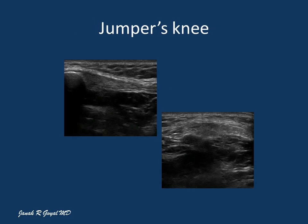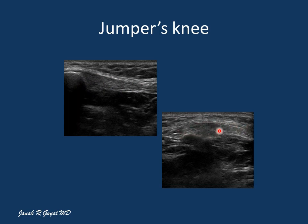Here is a patient with jumper's knee. Jumper's knee is a hypoechoic thickening of the patellar tendon at its attachment to the apex of the patella. Here is the long axis scan showing hypoechoic thickening at the attachment to the apex of the patella, and on the short axis scan you can see the hypoechoic thickening in the center of the patellar tendon.